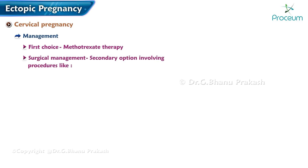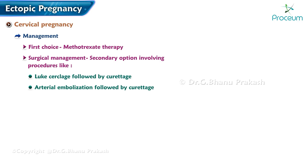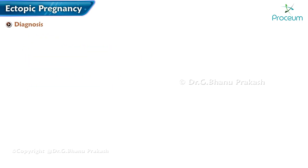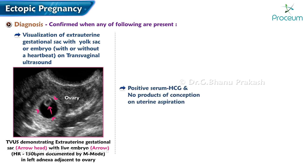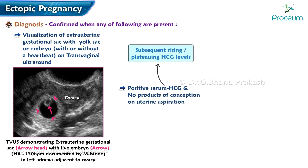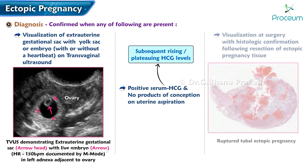Management of cervical pregnancy: the first choice is methotrexate therapy; surgical management is secondary, involving procedures like Lash or Clodge followed by curettage, or arterial embolization followed by curettage. Diagnosis of ectopic pregnancy is confirmed by: visualization of an extra-uterine gestational sac with yolk sac or embryo on transvaginal ultrasound, a positive serum hCG with no products of conception on uterine aspiration and subsequently rising or plateauing hCG levels.